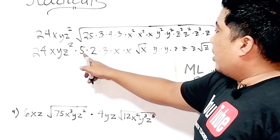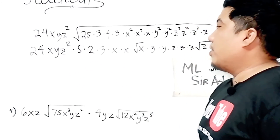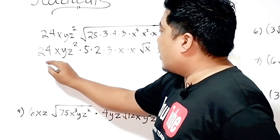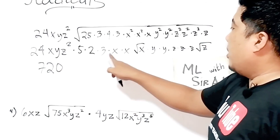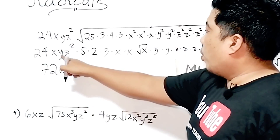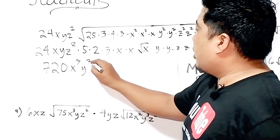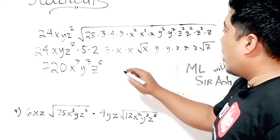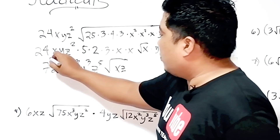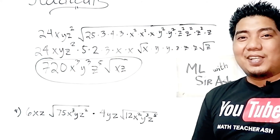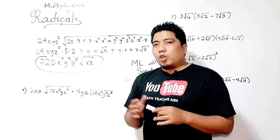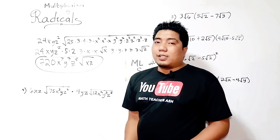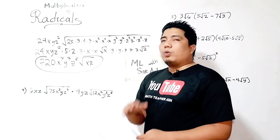So combining all the rational coefficients: 24 times 5 times 2 times 3 — 5 times 2 is 10, 3 times 24 is 72, 72 times 10 is 720. For x: we have three x's giving x³. For y: three y's giving y³. For z: we have five z's giving z⁵. For the radical expression: we have the square root of x times the square root of z, giving the square root of xz. So the final answer is 720x³y³z⁵ times the square root of xz. This is how you multiply radical expressions with only one term — simplify until no further simplification is needed.